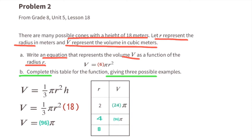For one more entry: when the radius is 8, the equation reads V = 6 × π × 8². 8 squared is 64. Multiplying 6 × 64 = 384, so when the radius is 8, the volume is 384π.